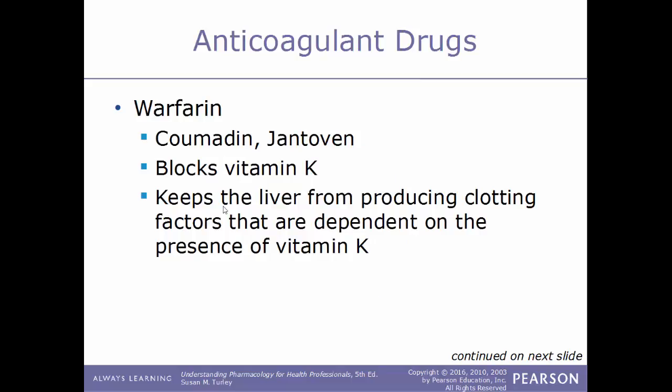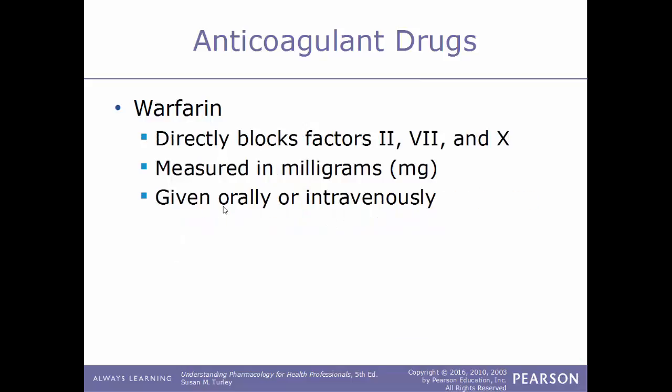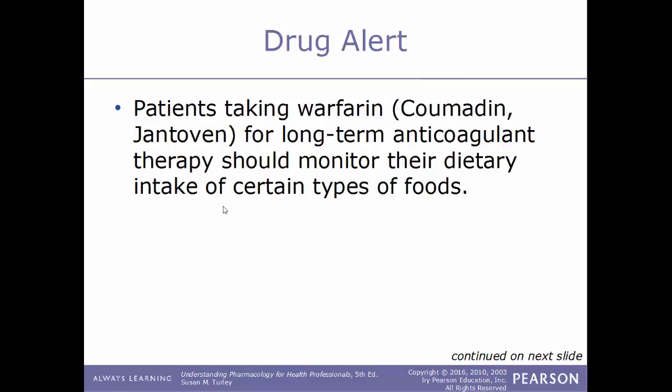Another well-known anticoagulant drug is warfarin, sold under the trade names Coumadin or Jantoven. This type of drug acts to block vitamin K and works by keeping the liver from producing clotting factors that are dependent on vitamin K. Warfarin also acts to directly block clotting factors 2, 7, and 10. Warfarin is measured in milligrams and can be given either orally or intravenously.